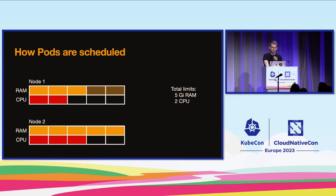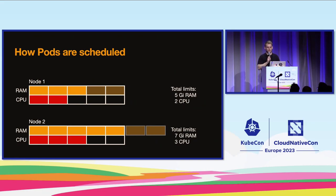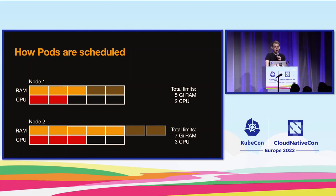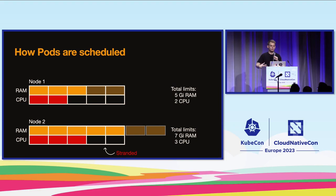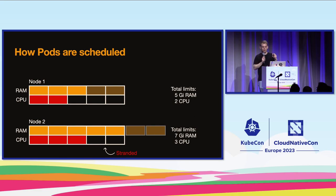This can lead to a problem, especially on node two where the limits are much higher than the actual capacity. Once pods start using memory up to their limits, we may run out of memory. There's another issue on node two: all memory is allocated but only three out of five CPU cores are in use. Those other two cores are stranded because we can't schedule anything else on a node that's already memory-full.